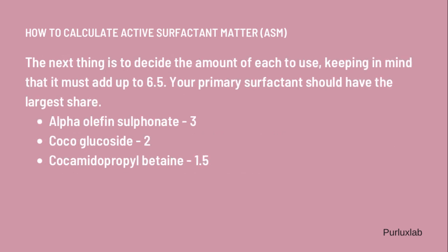Now I'm going to calculate the amount needed for each surfactant in the formulation. The first thing you need to do is assign the percentage or concentration of each surfactant you want in your formula. Keep in mind that the total must equal 6.5%, and your primary surfactant should have the larger share. So I'm using alpha-olefin sulfonate at 3%, cocoglucoside at 2%, and cocamidopropyl betaine at 1.5%.